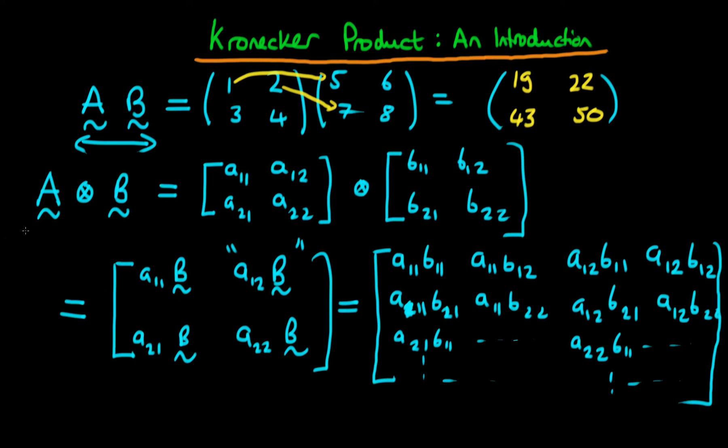Notice that we've taken two matrices which were themselves 2 by 2, and in taking the Kronecker product we formed a matrix which is 4 by 4.